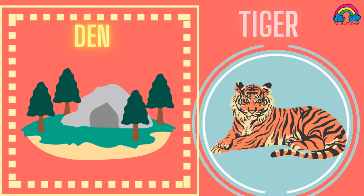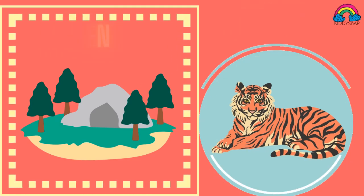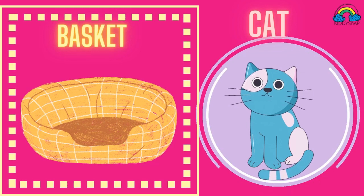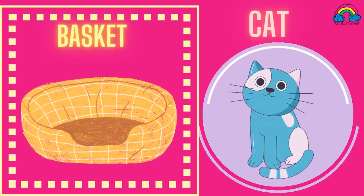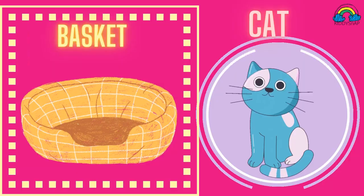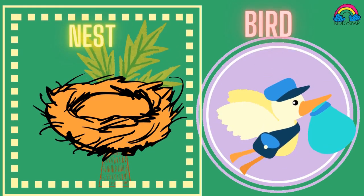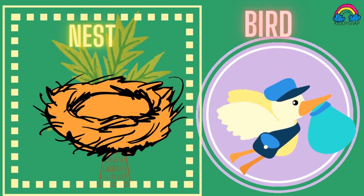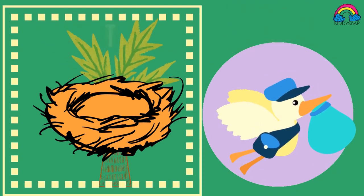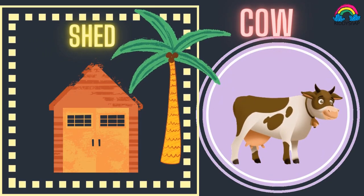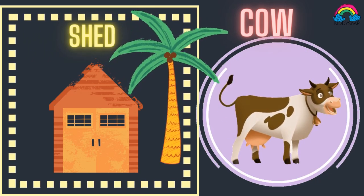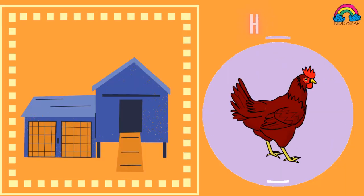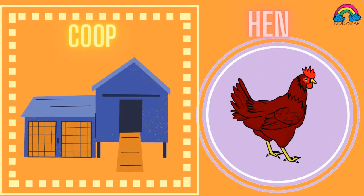Cat likes to sleep in a basket, so the cat's house is called a basket. Birds make their own nest and live in it — the house of a bird is called a nest. Cow's house is called a shed. Hen's house is called a coop.